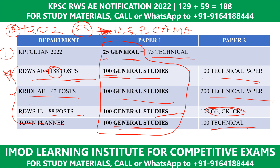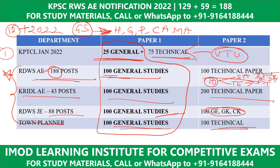The GS marks for KPTCL are 25. Coming to Technical — for one hundred notifications the syllabus has one hundred items. KPTCL is just VTU, but in RDWS there are 10 important subjects including Structural Analysis and Transportation Engineering, Traffic Engineering, Docks and Harbors, Tunnels and Bridge Engineering — all included.